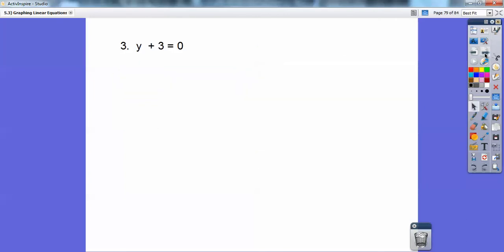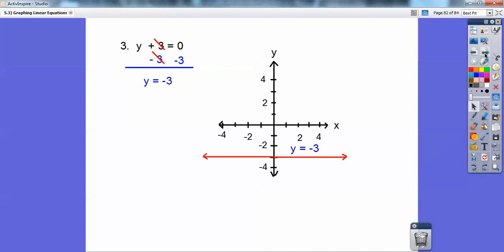One more. We're almost done. y + 3 = 0. You see how x isn't even involved? So if I subtract 3 on both sides, I get y = -3. And when it's y equals just a number, that's a horizontal line.